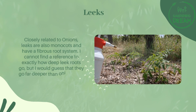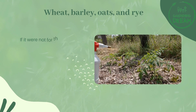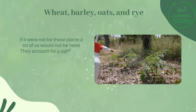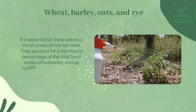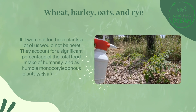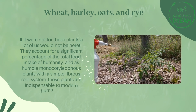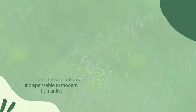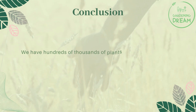I cannot find a reference to exactly how deep leek roots go, but I would guess they go far deeper than onion roots. Wheat, barley, oats, and rye — if it were not for these plants, a lot of us would not be here. They account for a significant percentage of the total food intake of humanity, and as humble monocotyledonous plants with a simple fibrous root system, they are indispensable to modern humanity.